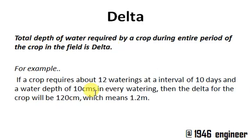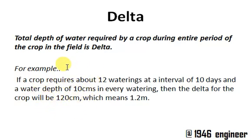Delta is the total depth of water required by a crop during the entire crop growth. For example, if you take a crop and you have to water it about 12 times, and every time you water it for 10 centimeters depth, then 10 centimeters multiplied by 12 waterings gives 120 centimeters of water — the total watering during its entire crop period. This 120 centimeters of water is known as delta.